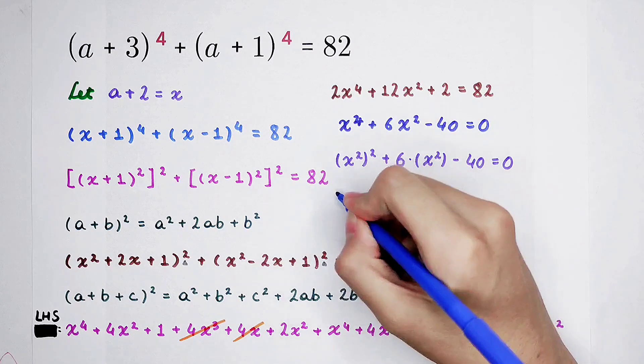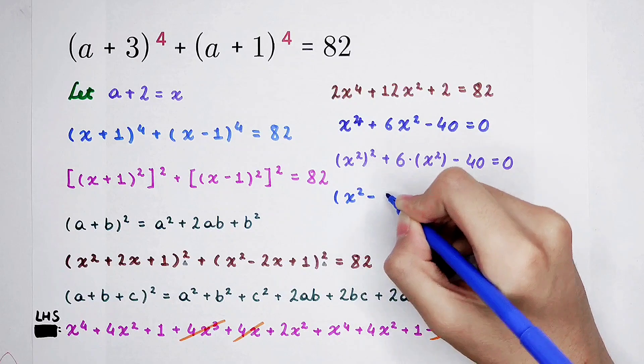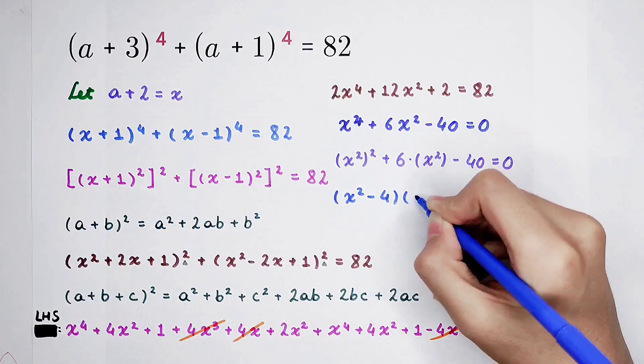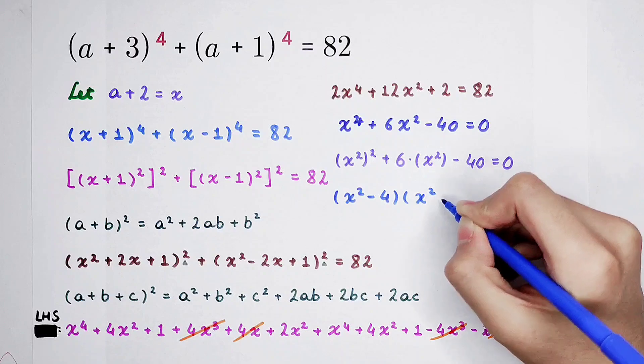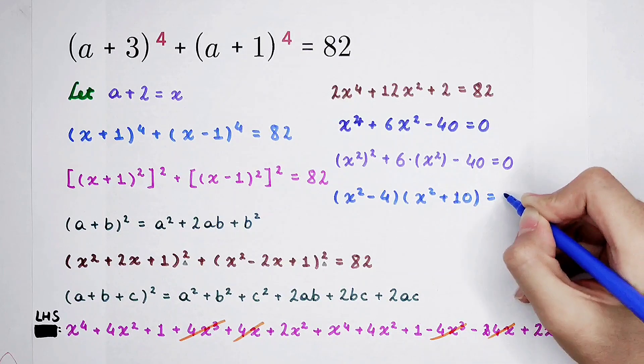By factorizing, you can do it: x squared minus 4, and then x squared plus 10, is equal to zero.